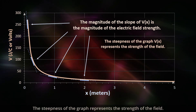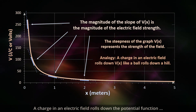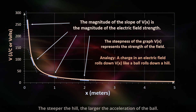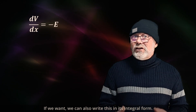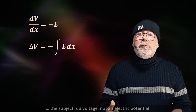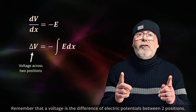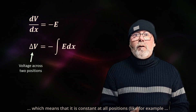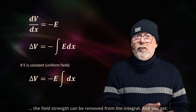The steepness of the graph represents the strength of the field. You can make an analogy: a charge in an electric field rolls down the potential function like a ball rolls down a hill — the steeper the hill, the larger the acceleration of the ball. We can also write this in its integral form. In that form, because we need to consider the integration constant, the subject is a voltage, not an electric potential. Remember that a voltage is the difference of electric potentials between two positions. If the electric field strength is uniform — constant at all positions, like between two parallel plates — the field strength can be removed from the integral.